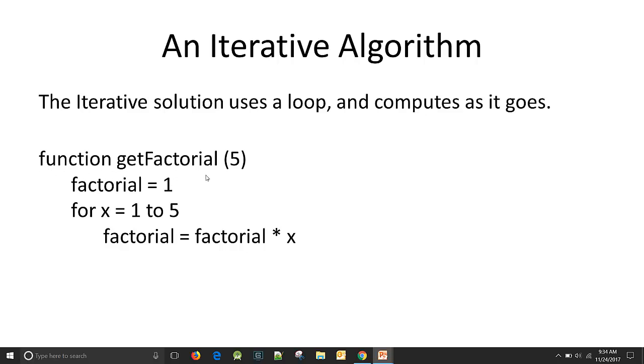Function get factorial for number 5. We're going to pass in an integer 5. We'll first set factorial equal to 1. This is going to be our running total. For x equals 1 to 5, so that's a loop from 1 to 5, and then we say factorial equals factorial times x.